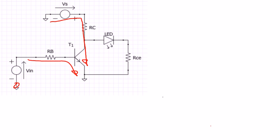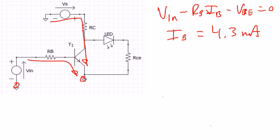We say VIN minus RB IB minus VBE equals zero. Rearrange that and solve for IB. We get IB is equal to 4.3 milliamps.